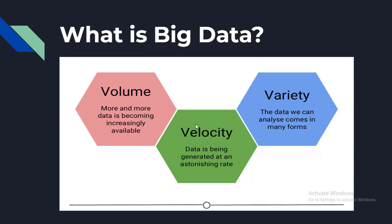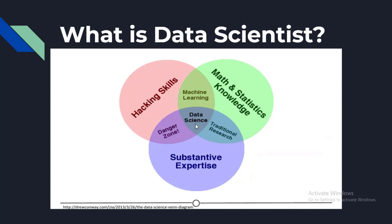Something we need to discuss is what exactly a data scientist is. The most basic definition would be that a data scientist is somebody who uses data to answer questions. But more importantly, what skills does a data scientist embody? To answer this, Drew Conway's illustrative Venn diagram shows data science as the intersection of three sectors: substantive expertise, hacking skills, and math and statistics.